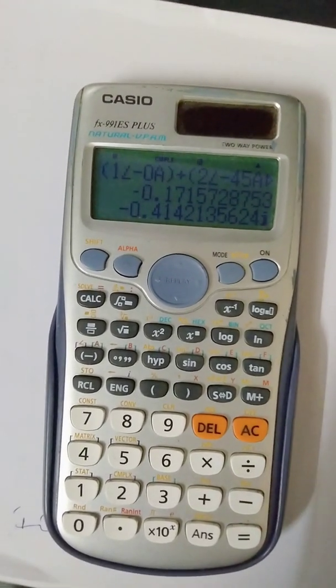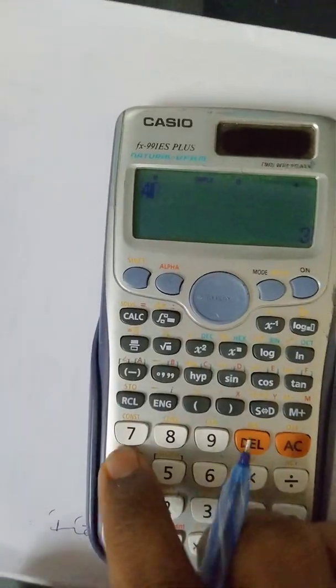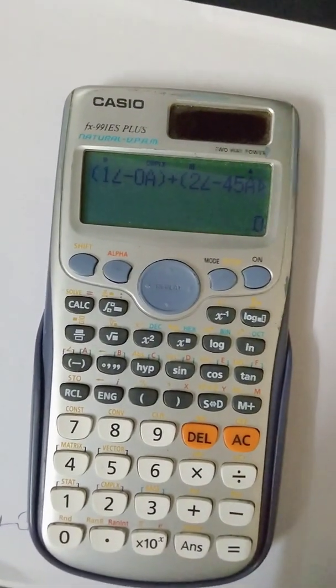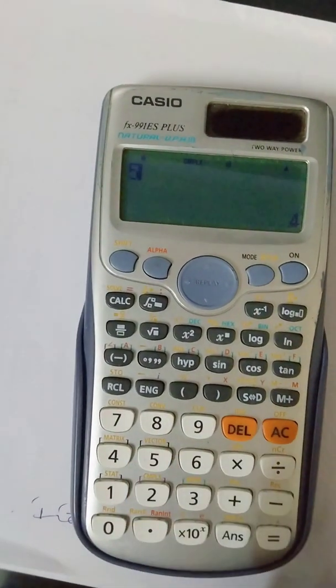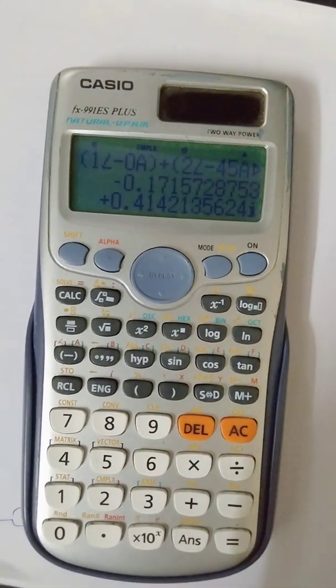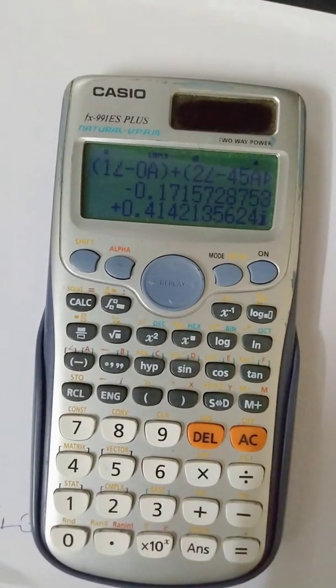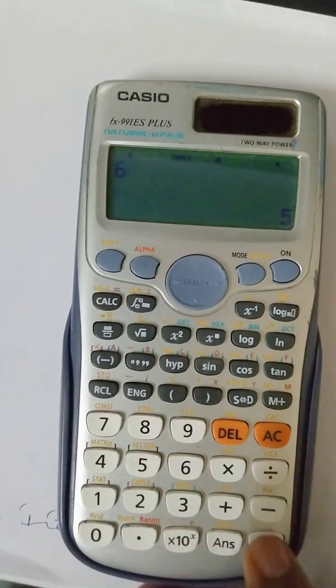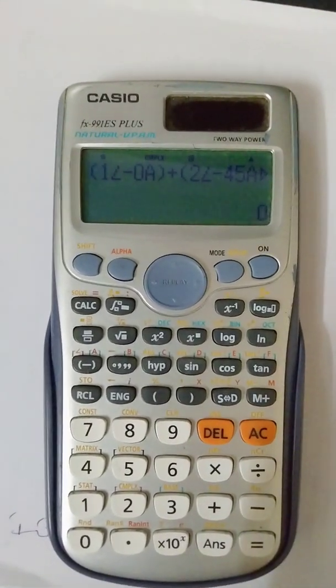Similarly, for the other values you can press on CALC and 4, which is equal to 0 here. And X of 5 is given by CALC and 5, which is equal to minus 0.171 plus 0.414j. And similarly, for calculating the sixth value, press on 6, and that gives us X of 6 is equal to 0.